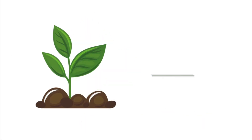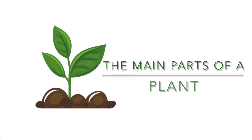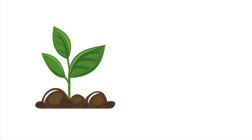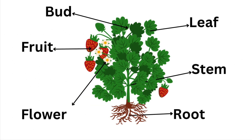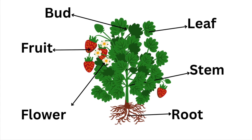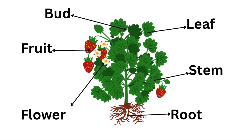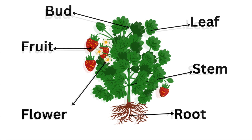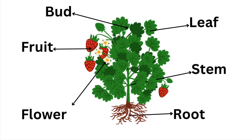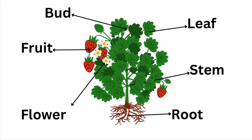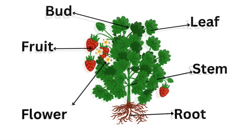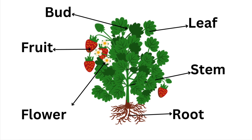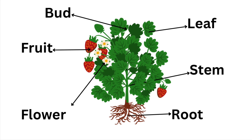So, the main parts of the plant are... everybody, repeat with me: root, stem, leaf, bud, flower, and fruit.